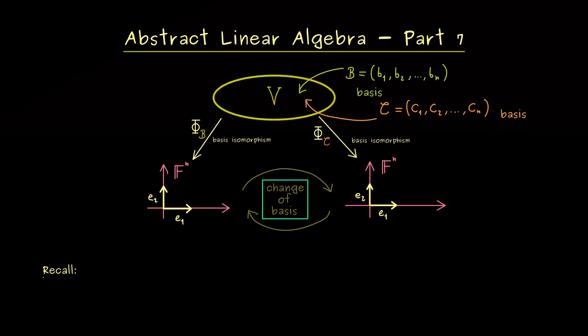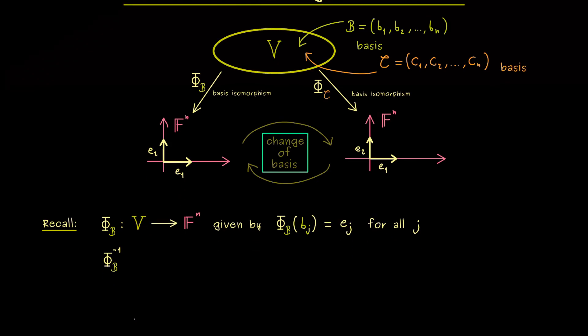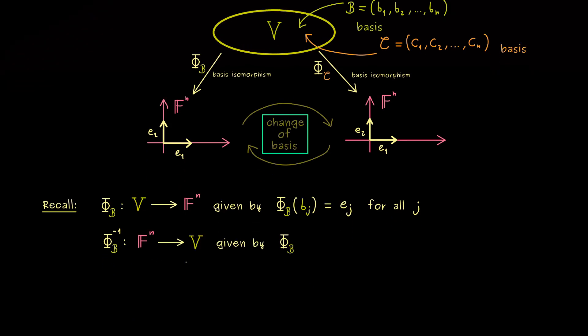First recall that our basis isomorphism is a bijective map. And moreover it's a linear map defined by using the basis vectors as said before. So b_j is mapped to e_j in F^n. This implies that we already know what the inverse φ^(-1) does. Namely it sends F^n to V and it maps the canonical unit vector e_j to b_j. So we also see that in the picture above it's simply this arrow backwards. Hence each abstract vector v can be represented by a coordinate vector. Or more precisely we would write v is equal to φ inverse of this coordinate vector.